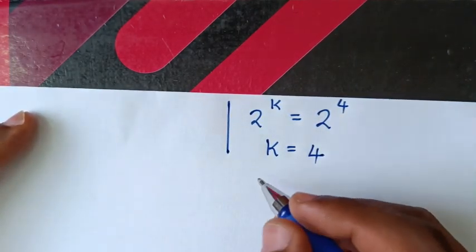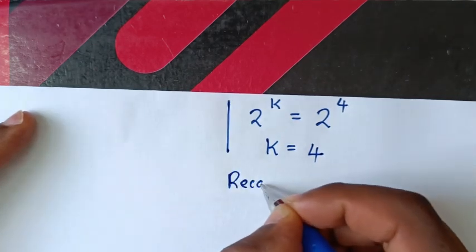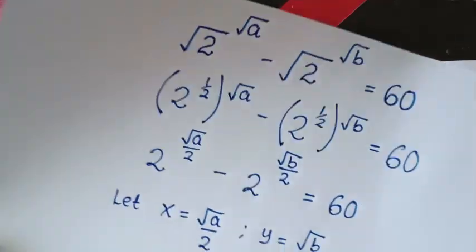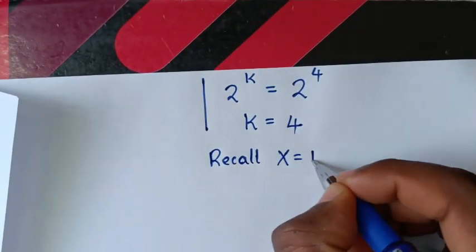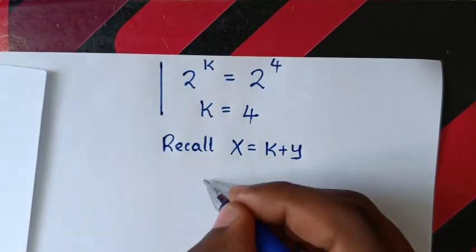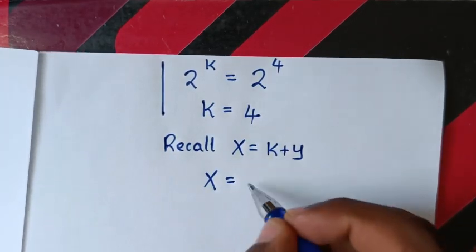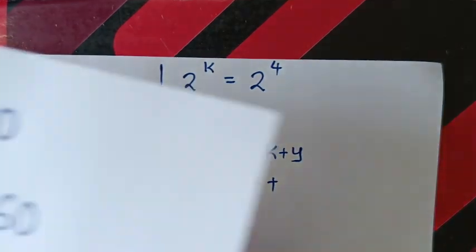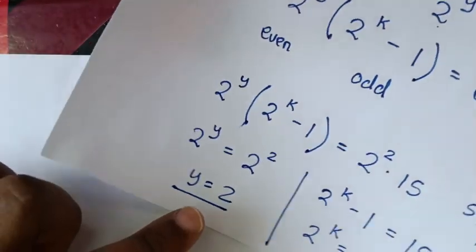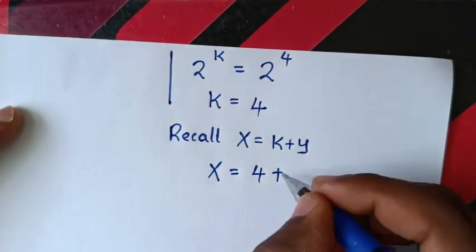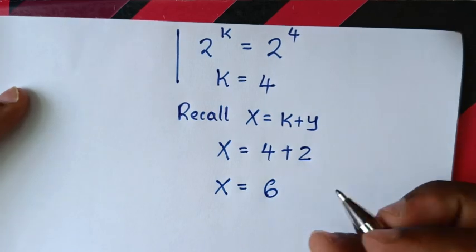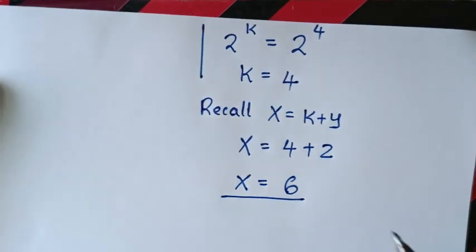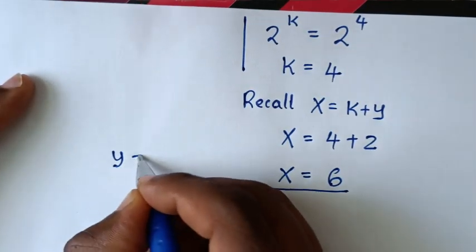Now we need to find the value of x. Recalling that x equals k plus y, we substitute: x equals k, which is 4, plus y, which is 2. So x equals 4 plus 2, which is 6. So the value of x is 6, and the value of y is 2.